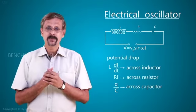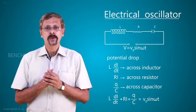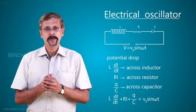The equation becomes L dI by dt plus RI plus Q by C equal to V0 sin omega t.